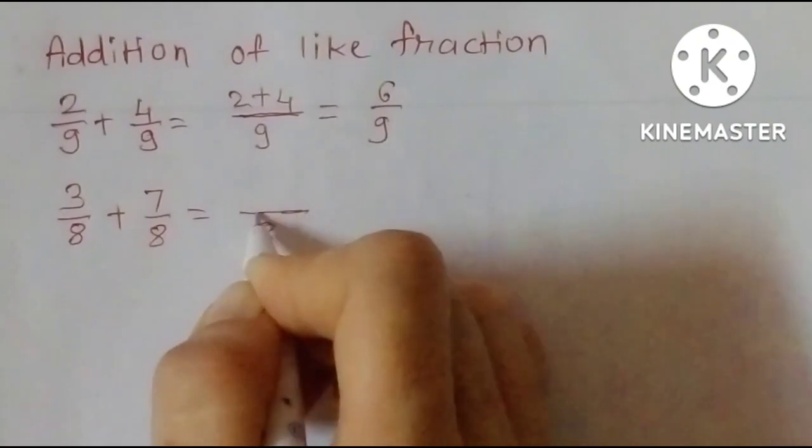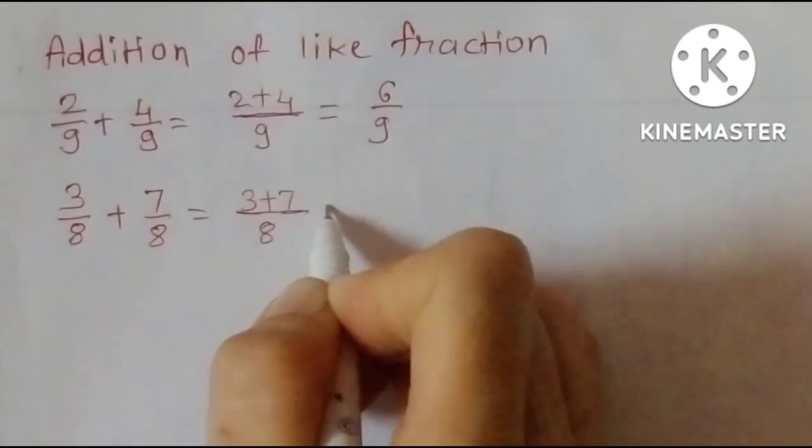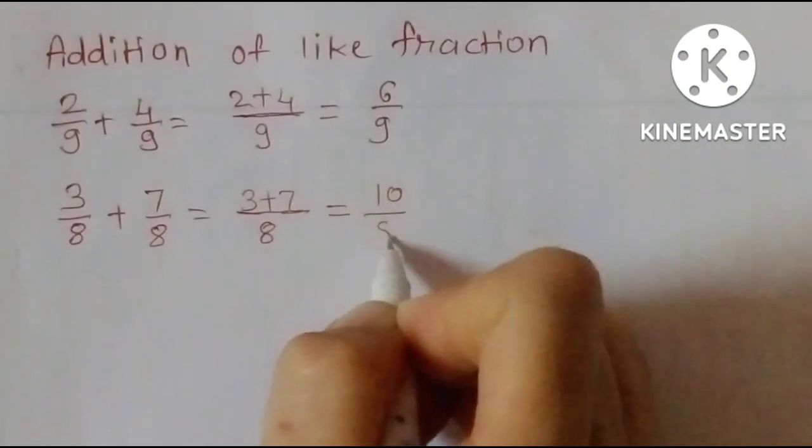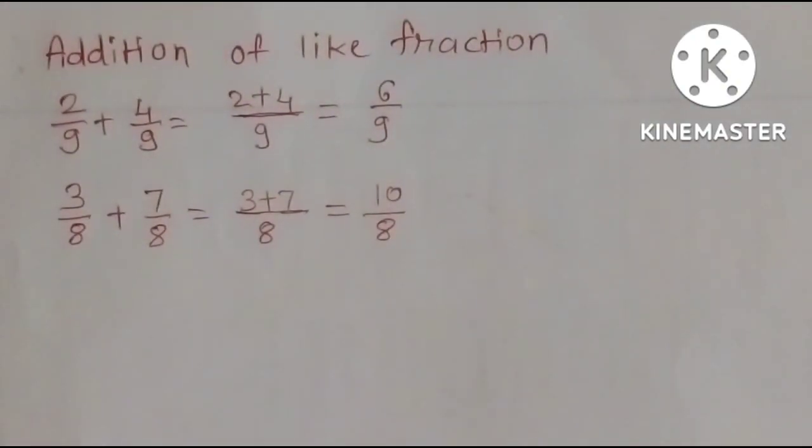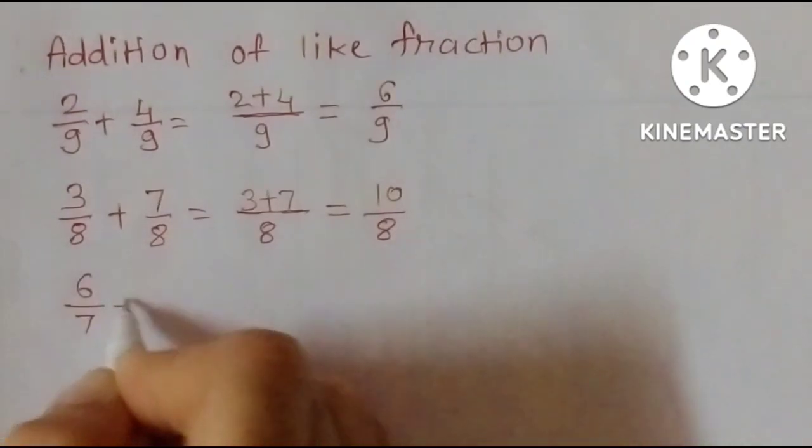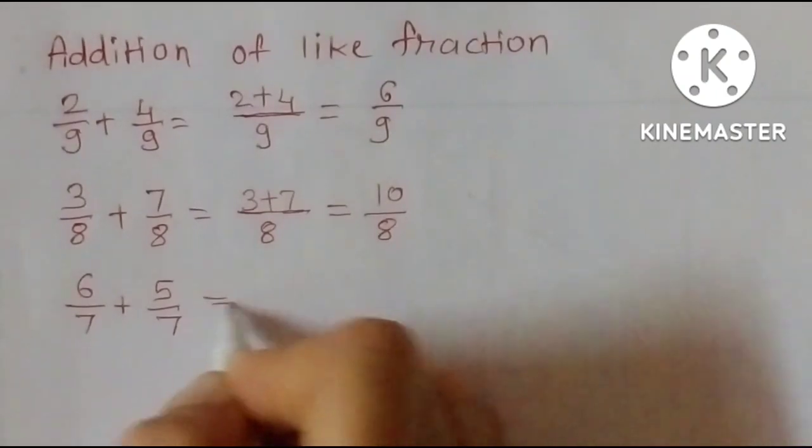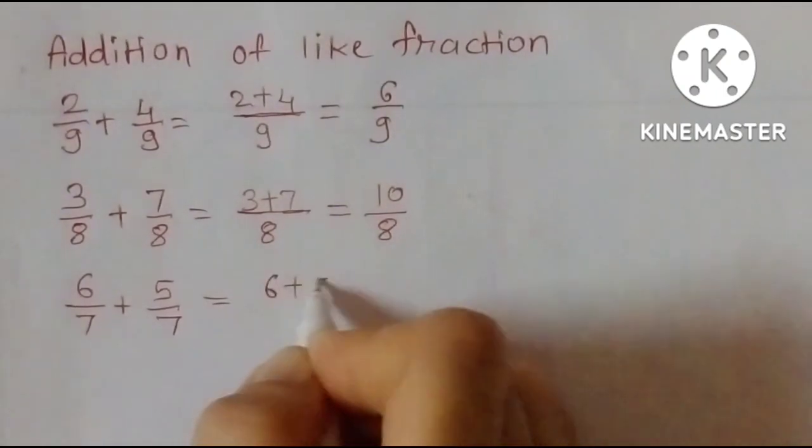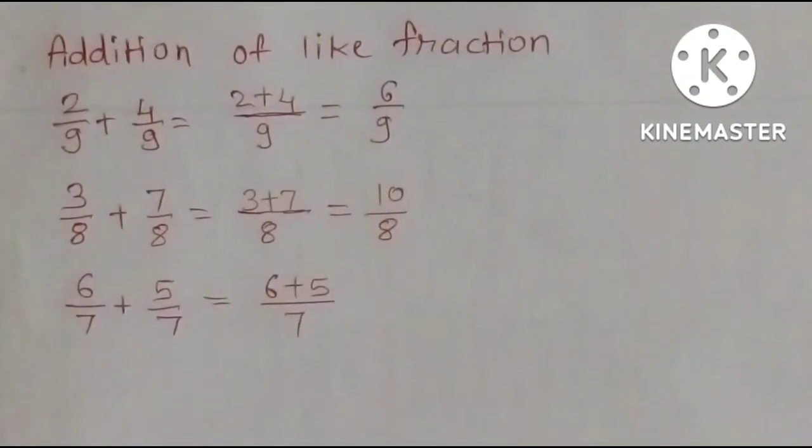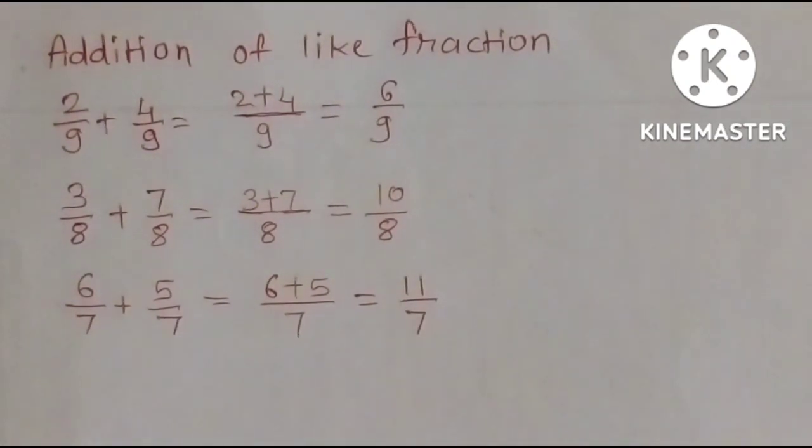The denominators are same. 3 plus 7 is equal to 10 upon 8. Next sum: 6 upon 7 plus 5 upon 7. 6 plus 5 is 11 upon 7.